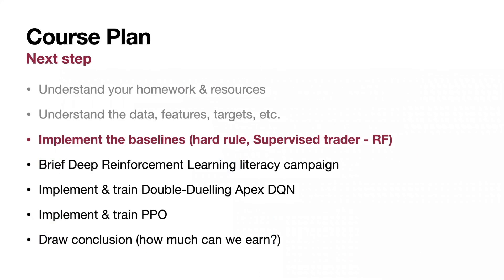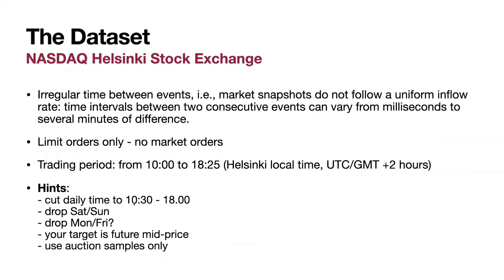I described the data. What kind of features do we have there? What kind of targets do we have there? And now you are pretty capable of implementing hard rule trader and implementing simple random forest supervised trader. For hard rule trader, buy one share at 10:30 of each day, sell this share at 6 p.m. same day. Next day, the same. Then you calculate your net worth.